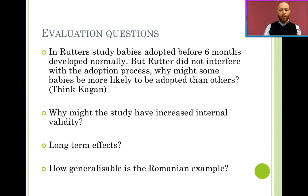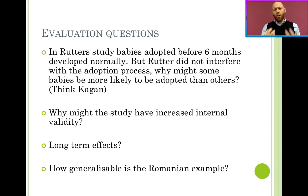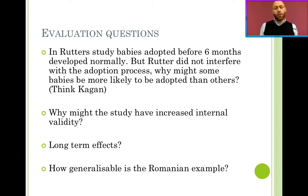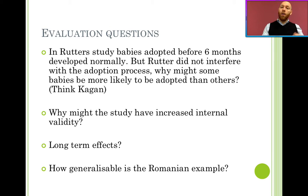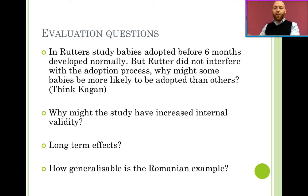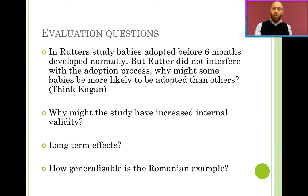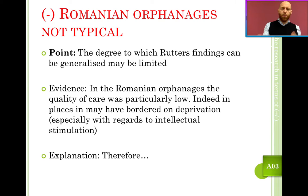That might affect the internal validity. There's also a question of how generalizable the Romanian sample is. These institutions were extremely poor, the quality of care was non-existent, and many children were also malnourished. This raises the problem of how you isolate physical deprivation from emotional privation — not getting enough food versus not getting enough emotional stimulus.